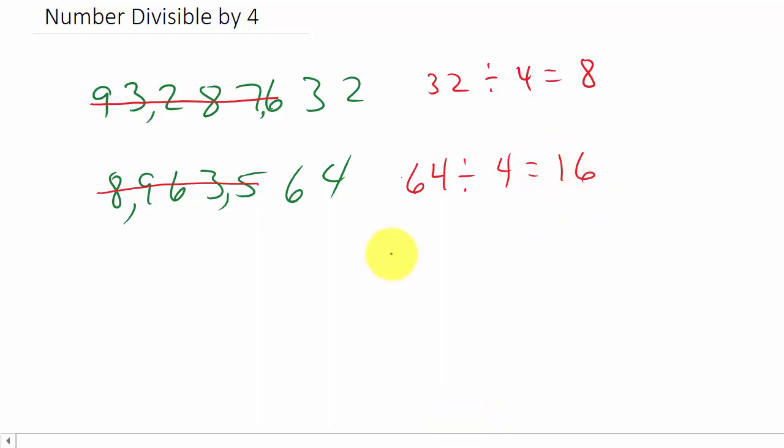It goes in there 16 times. And if you need to use long division on it, you can. 4 goes into 6 once. 1 times 4 is 4. 6 minus 4 is 2. Bring down the 4. 4 goes into 24 six times. And there's your remainder of 0.